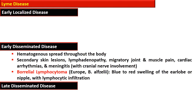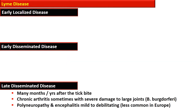In the early disseminated stage, there is hematogenous spread of the organism within the body, with secondary skin lesions, lymphadenopathy, migratory joint and muscle pain, cardiac arrhythmia, and meningitis. Borrelia lymphocytoma, caused by Borrelia afzelii, is a blue-to-red swelling of the earlobe or navel with lymphocytoma infiltration. In the late disseminated stage, months to a year after the tick bite, there is chronic arthritis with severe damage to large joints, more often seen with Borrelia burgdorferi. Polyneuropathy and encephalitis range from mild to debilitating.